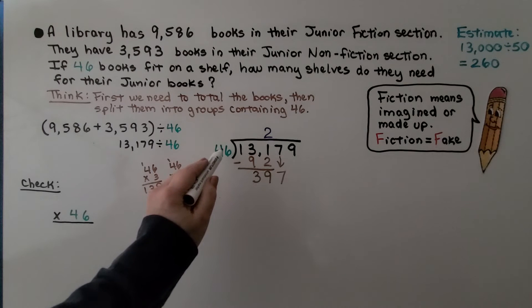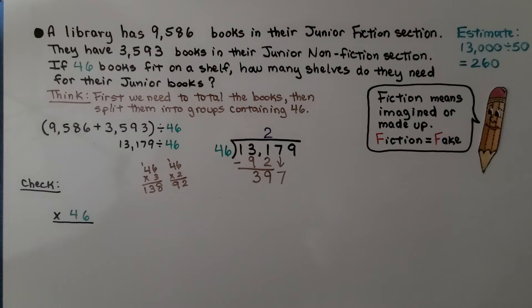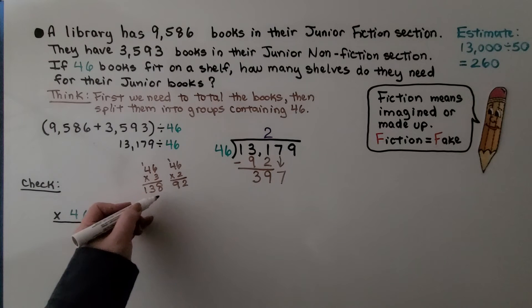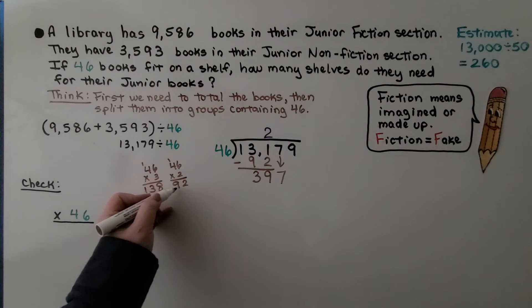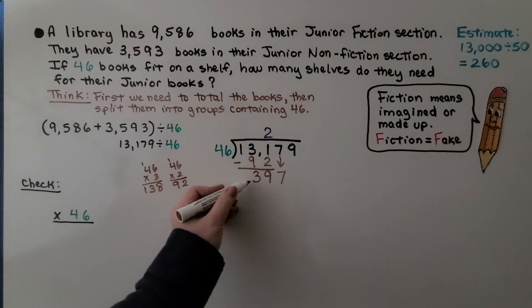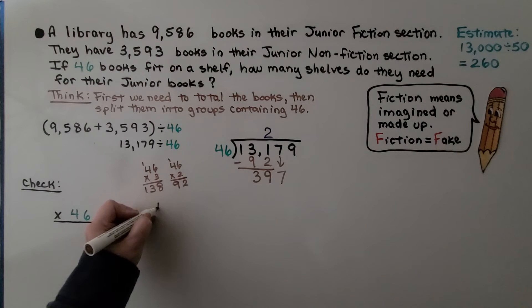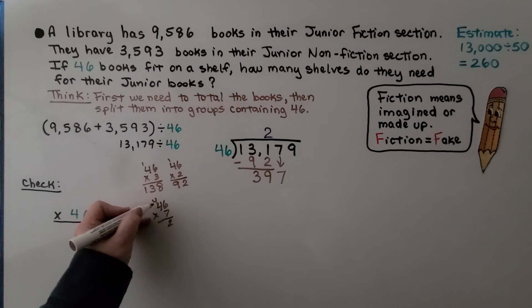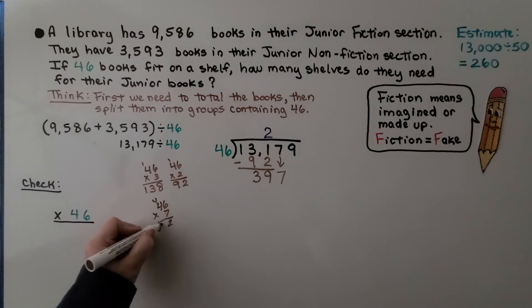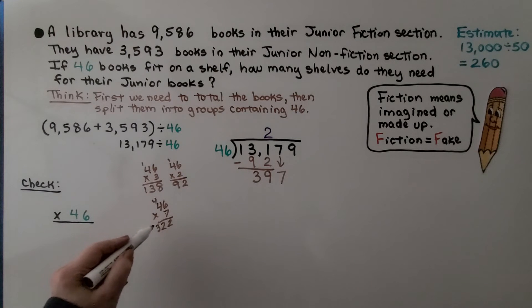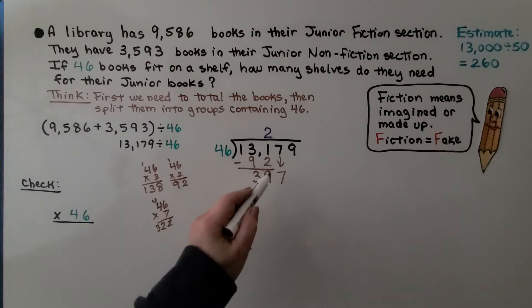How many times can 46 fit into 397? We can do a little math on the side. If 2 are 92, then let's try 6 because that would be close to 300. Or maybe even 7 because that would be close to 350. So let's try 46 times 7. 7 times 6 is 42. 7 times 4 is 28 and 4 more. We have 28 and 4, which is 32.